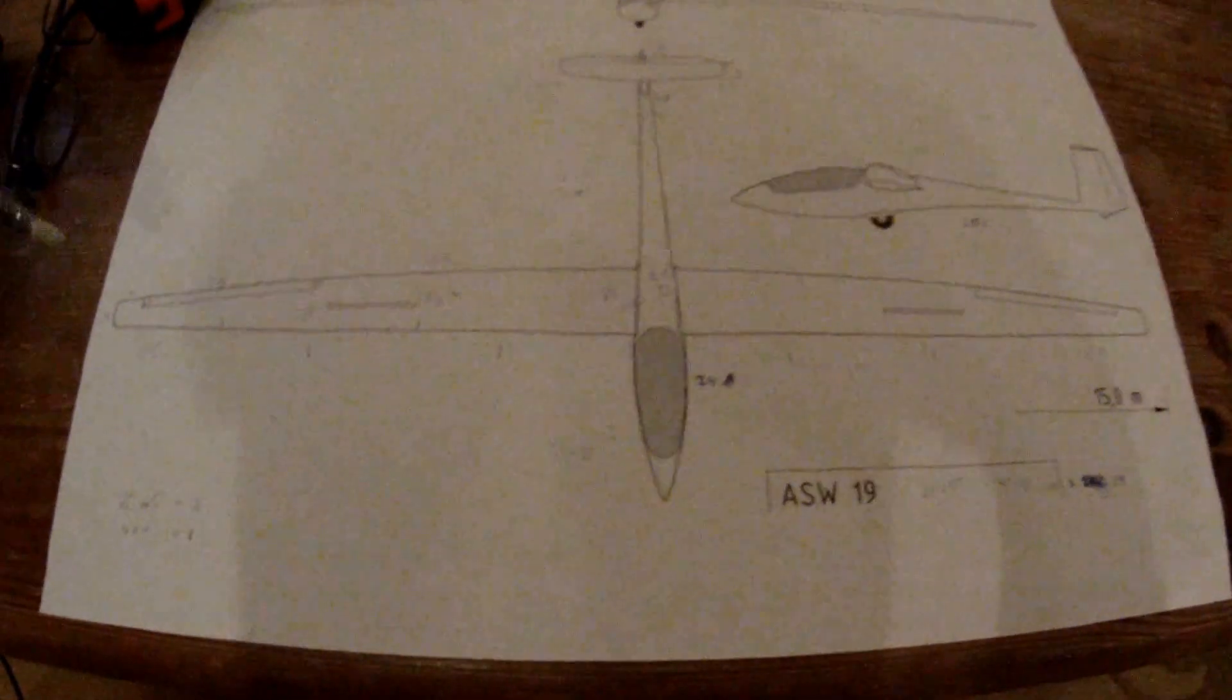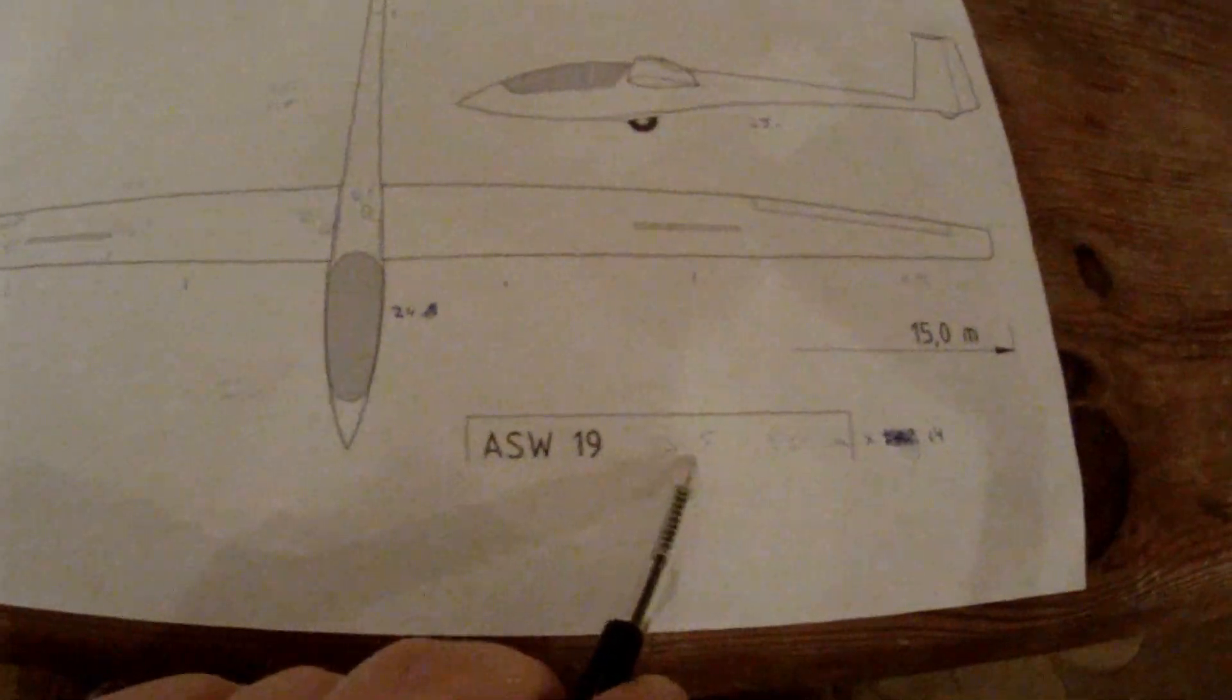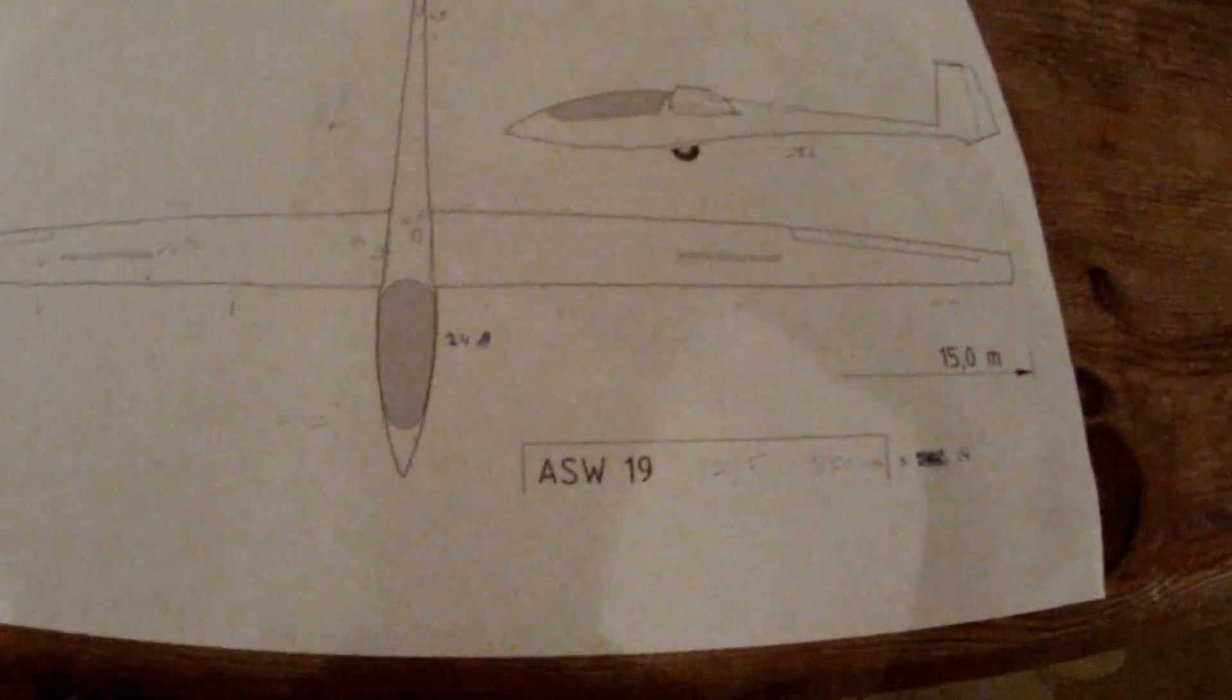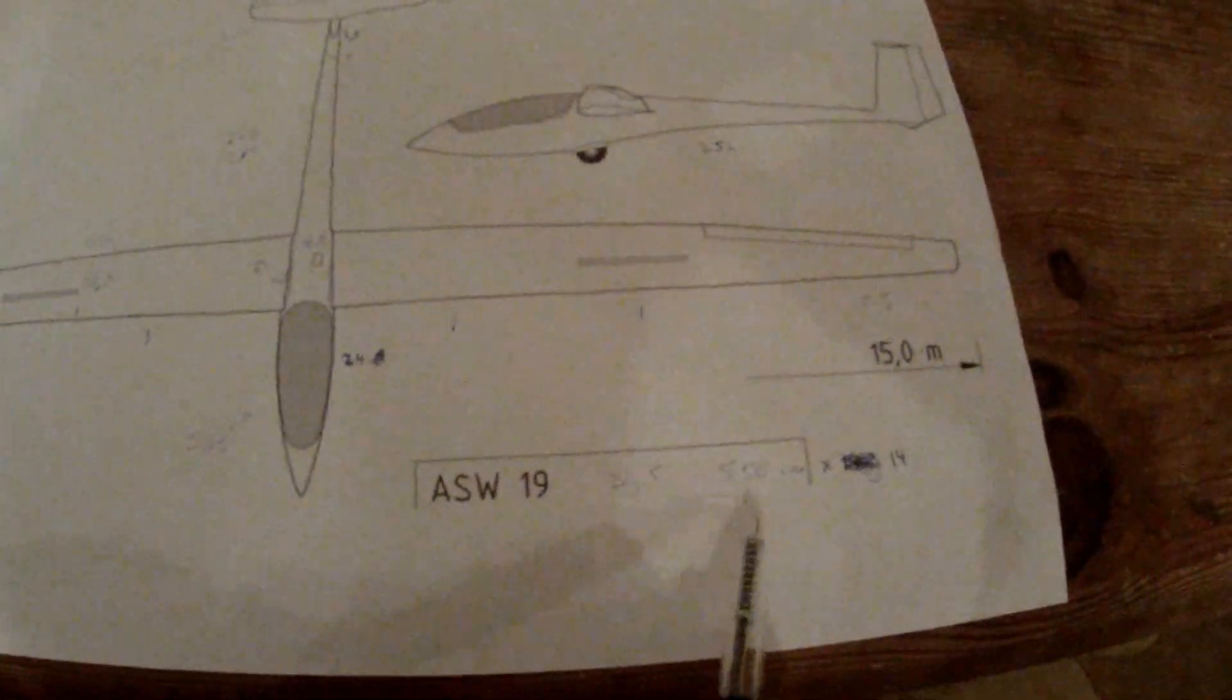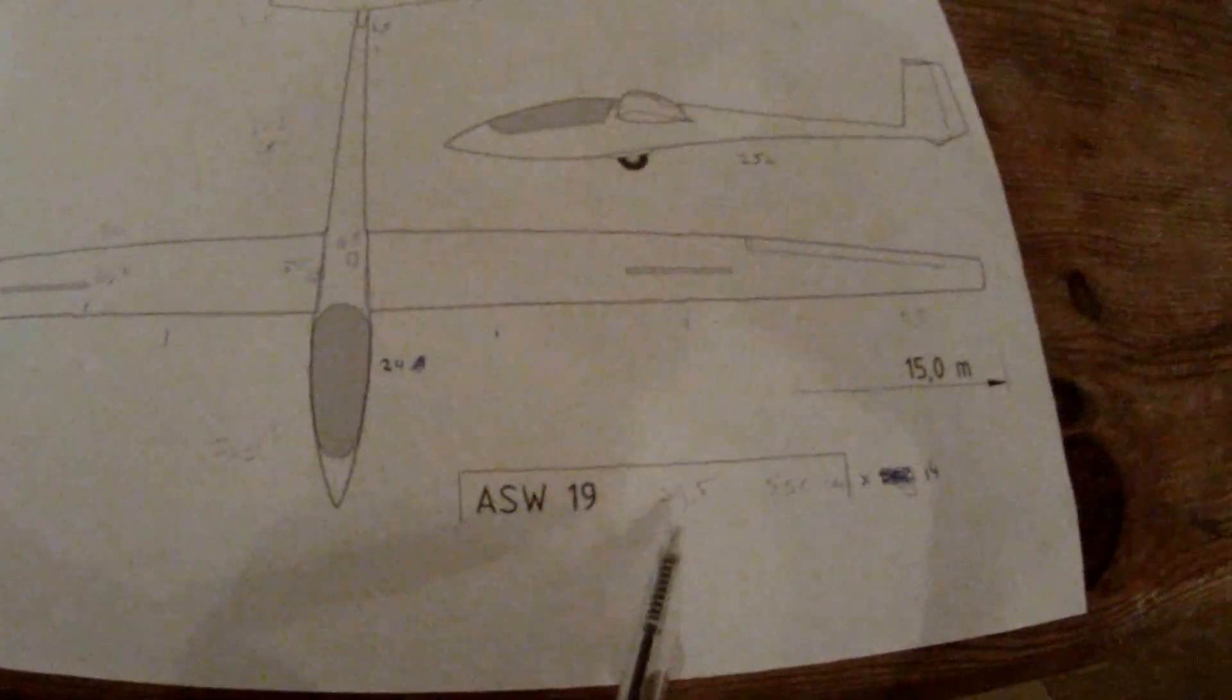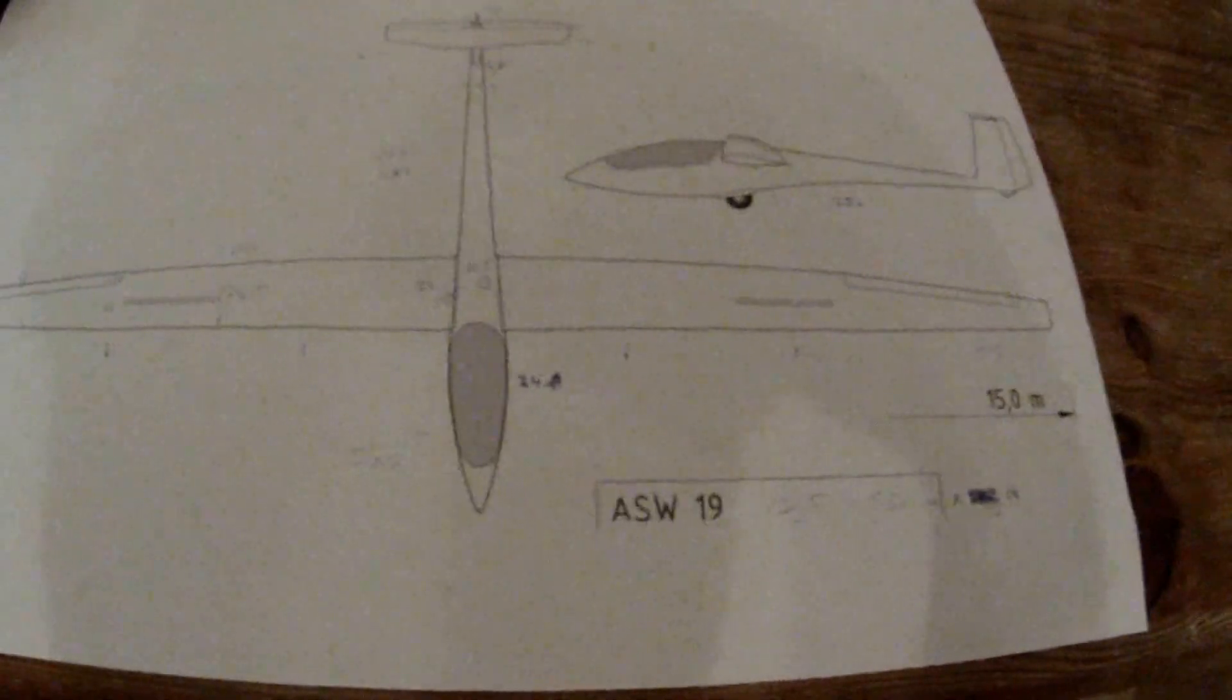You just measure this point to that point, and that will be 39.5 centimeters. But I don't want it to have 39 centimeters, I just want to have five and a half meters. So when I have this size, I just do it times 14, and then it will be the actual size.